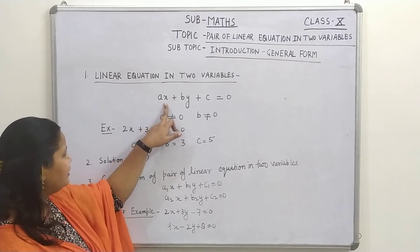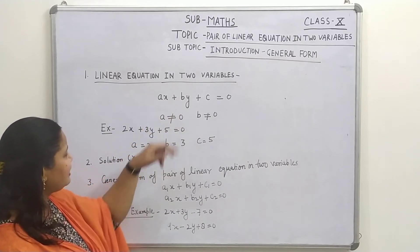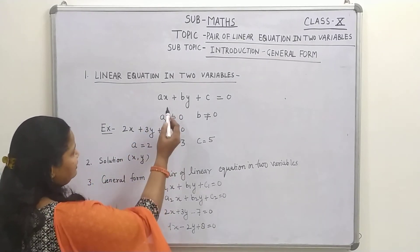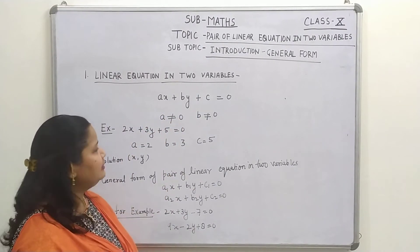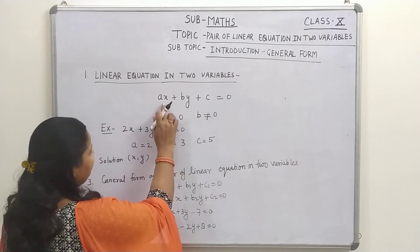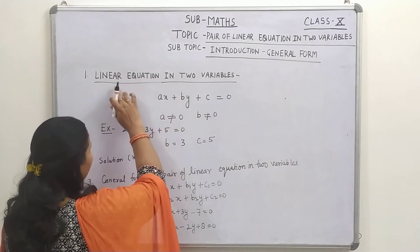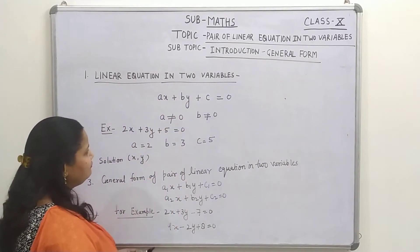Children, you can see here, there are 2 variables X and Y having the exponent as 1. So, it is a linear equation because this equation has degree 1. And now, it is having 2 variables, that is why we called it linear equation in 2 variables.